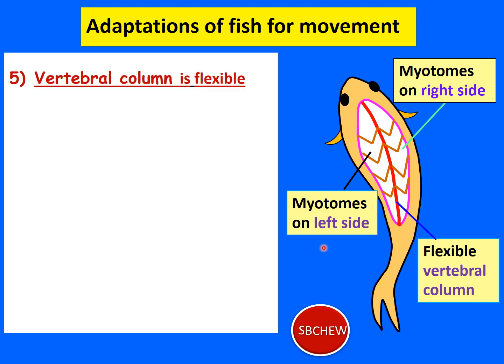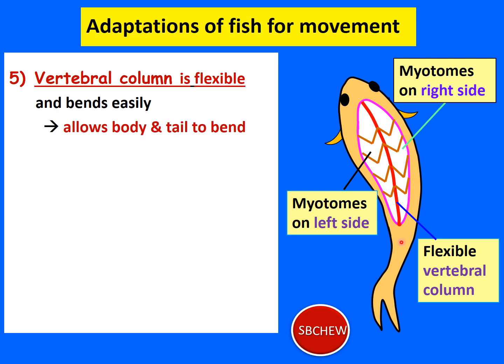The vertebral column of the fish is located in the center of the body and is very flexible, bending easily. This allows the body and tail to bend from left to right and right to left — side to side. When the body and tail bend from side to side, it produces a forward thrust that moves the fish forward.